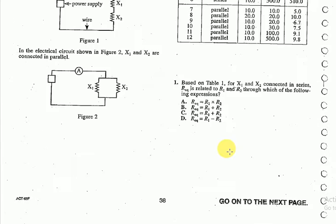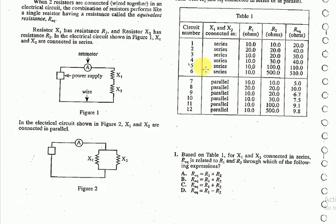We can go and see the table for circuit number 5. In that, resistor X1 and X2 are connected in series, and R1 is 10 ohms and R2 is equal to 100 ohms.